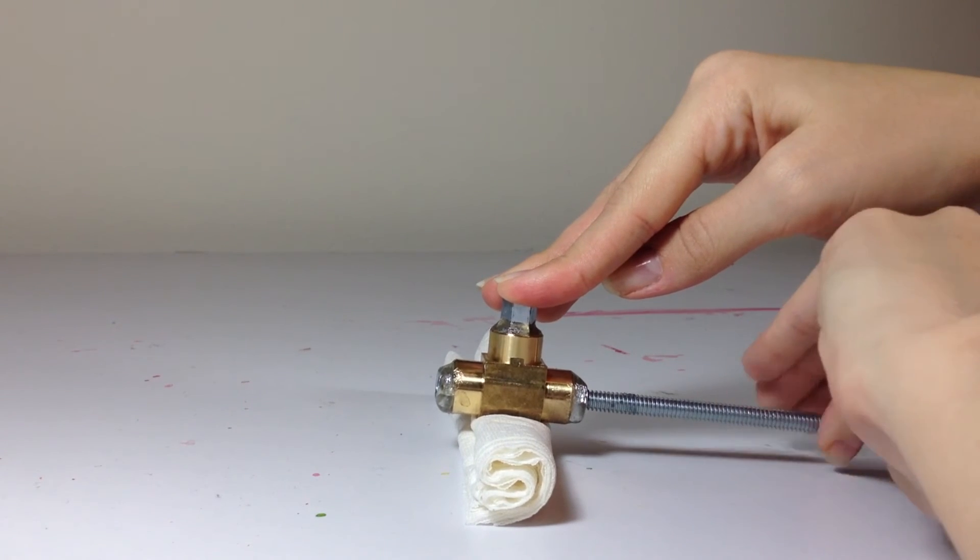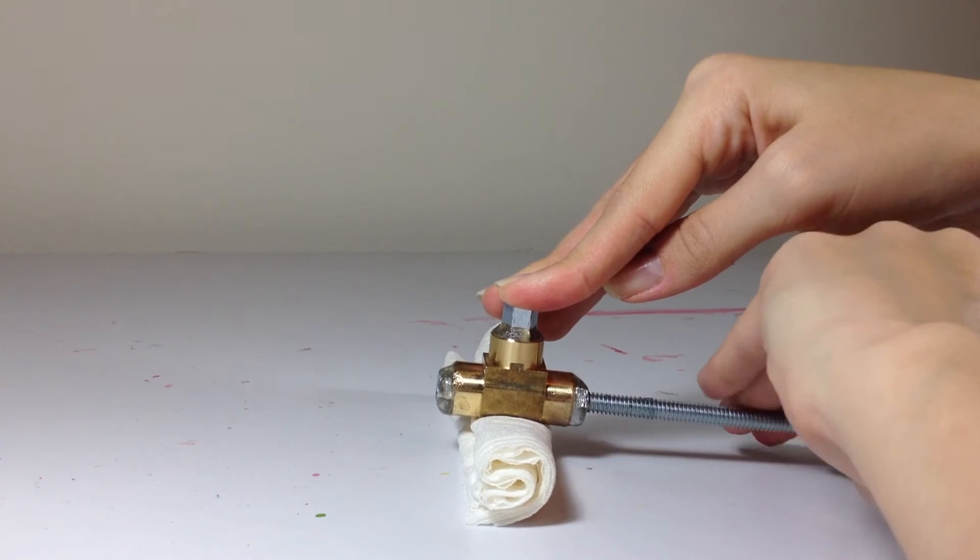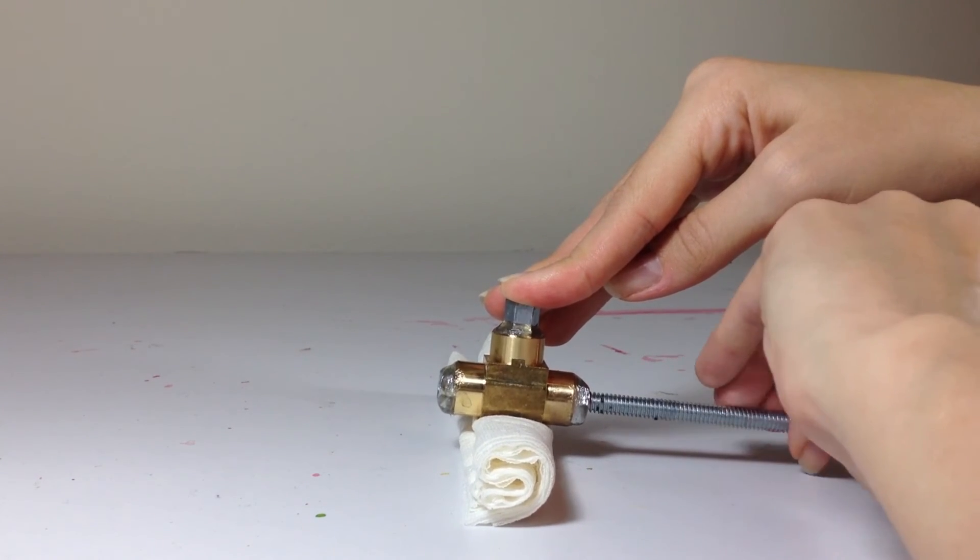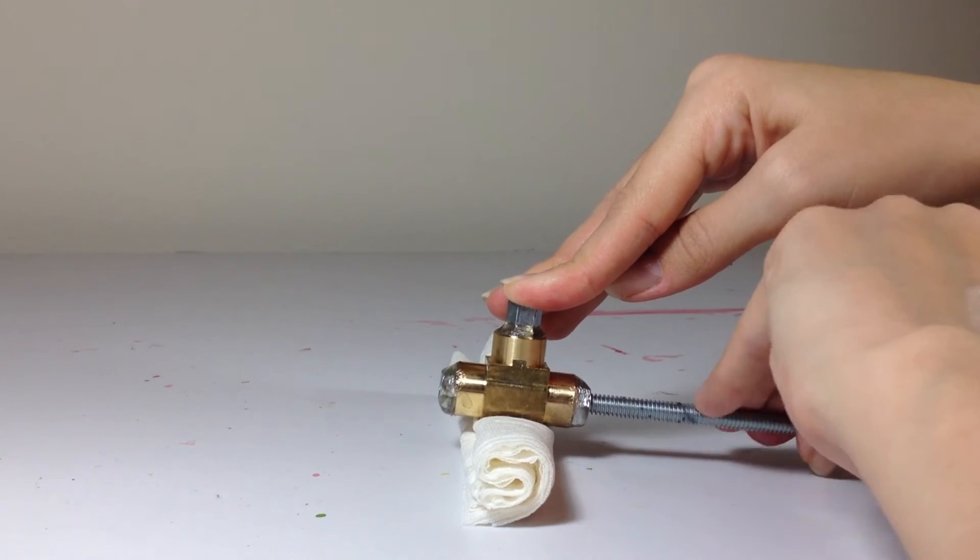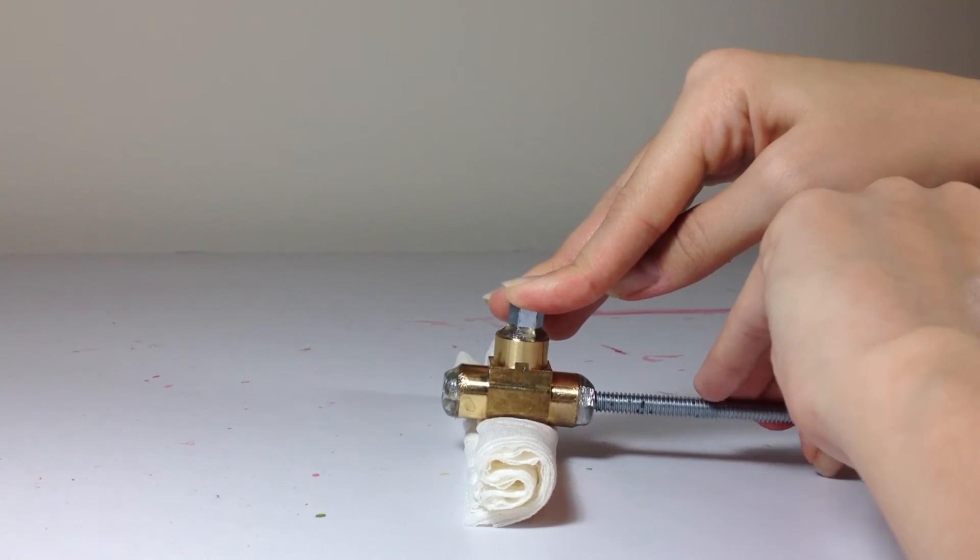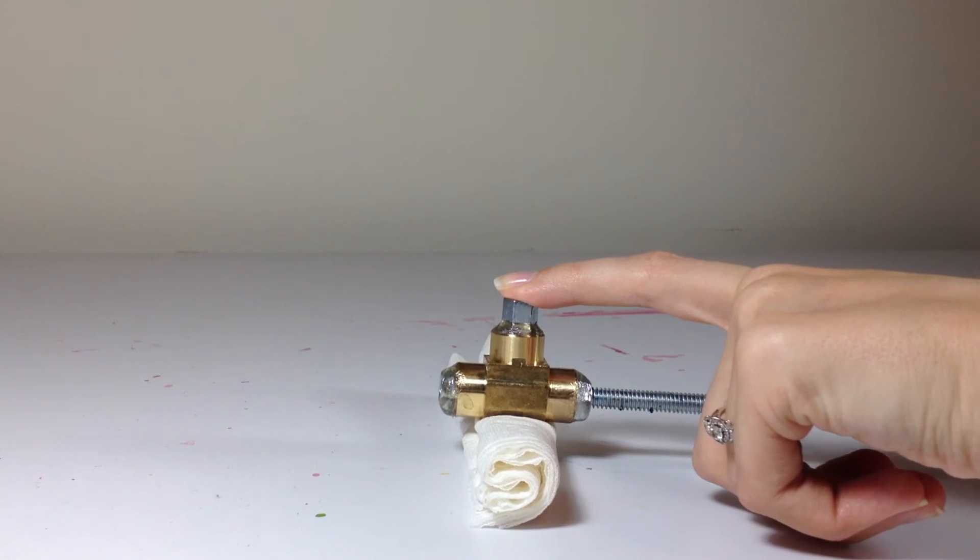You can take out the rod and this way if you've got any epoxy on it, it won't permanently harden. And then you'll want to let the epoxy dry overnight. 24 hours is full strength.